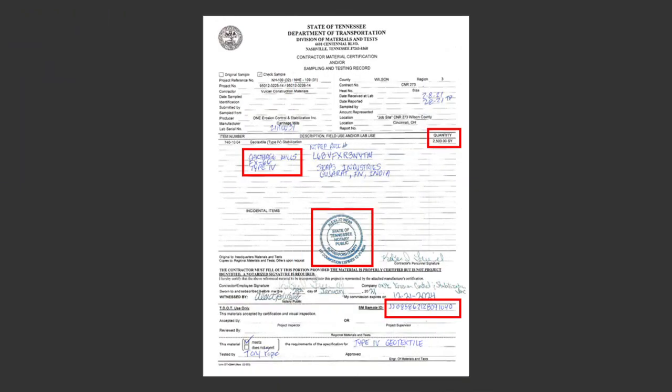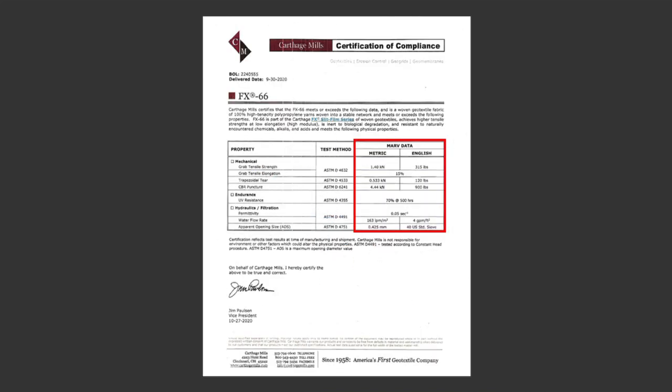First, the inspector must ensure that the material certification is completed with the manufacturer and the product, the quantities, the sample ID, and the notarization. The sample must also be entered into Site Manager. The manufacturer certification with mean average roll value must be included in the submittal.